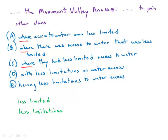B says: where there was access to water that was less limited. Well, that's incredibly awkward and wordy, so we're going to eliminate that.